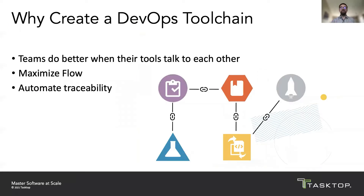There are a lot of benefits to creating a DevOps toolchain, and here are just a few highlights. Teams really do better when their tools can talk to each other — when they're integrated. This eliminates hours of busy work by removing the need for teams to update multiple tools to keep that data in sync, which is usually done manually.